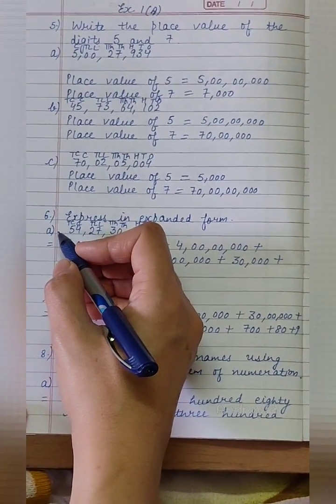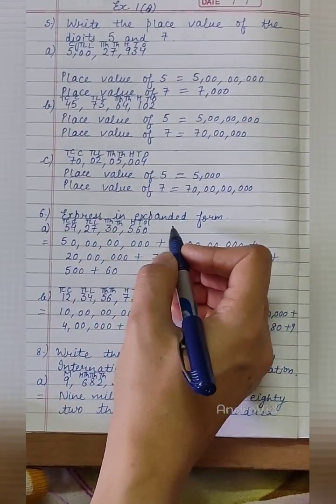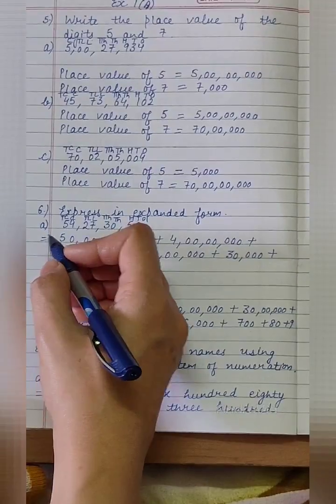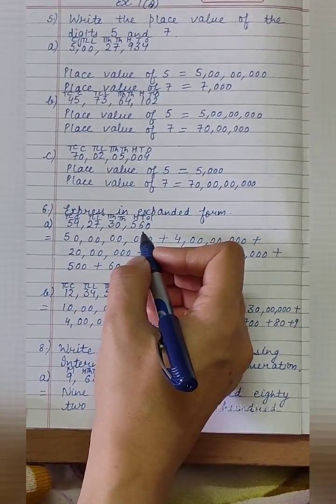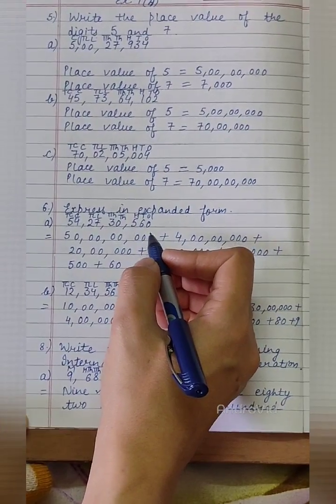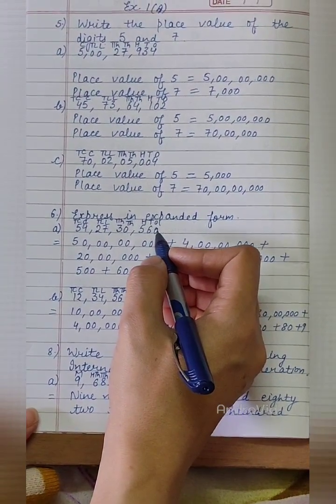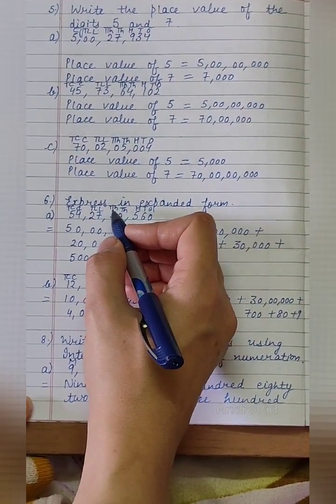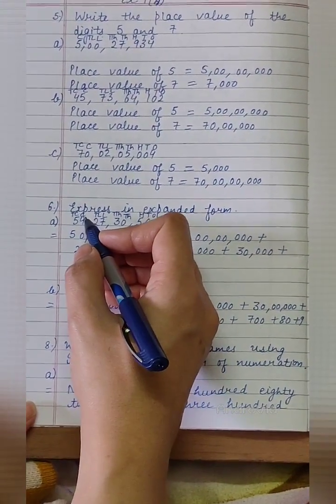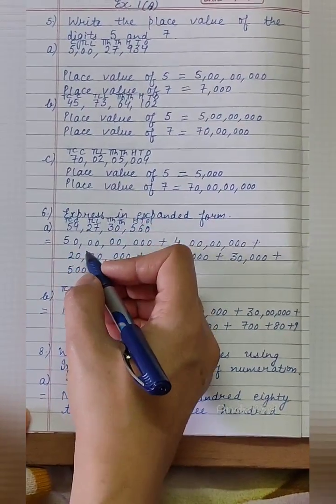Let's move to question number 6. Express in expanded form. Part A is 542730560. Firstly, according to Indian system of numeration, we will write here 1s, 10s, 100s, 1000s, 10,000s, lakhs, 10 lakhs, crore, 10 crore.